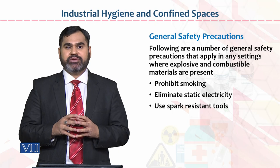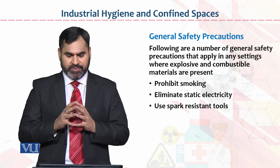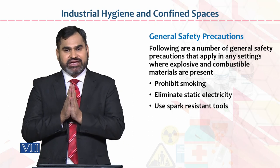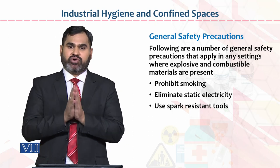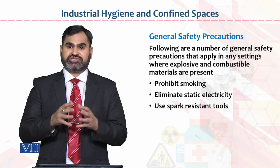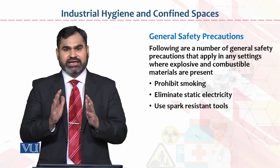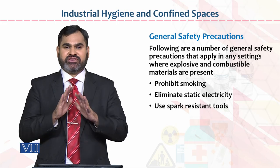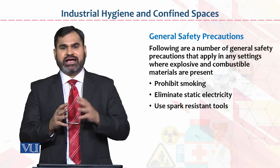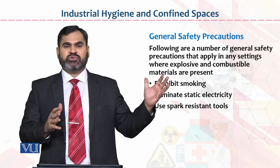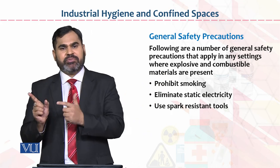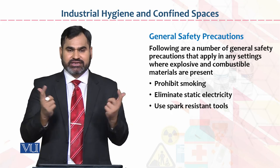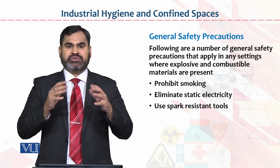Number one: prohibit smoking. Prohibit smoking ka matlab hai ki agar koi employee smoker hai, unko bataya jaye ki jis jagah pe woh smoking kar rahe hain woh organization ki favor mein nahi hain. Unke liye baaqaida excepted space ho, woha pe jah ke smoking karay, phir woh aake apni duty perform karay. Ya unko bata diya jaye ki is organization ke andar smoking waise hi prohibited hai.